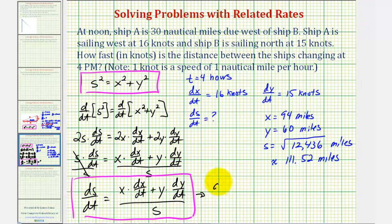So when T equals four, dS/dt is going to be equal to X, which is 94 times dX/dt which is 16, plus Y which is 60 times dY/dt which is 15, divided by S. We'll use the exact value here of the square root of 12,436.